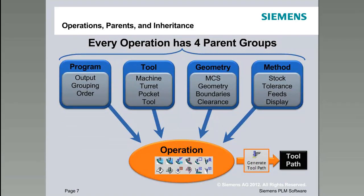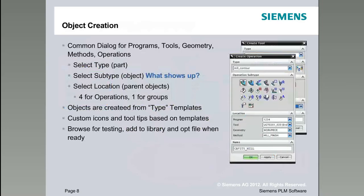Another way to look at these groups and operations: in NX, every operation really has four parent groups. You'll see this called parents, and these are represented by the four different views in the operation navigator. So every operation has to have a program, a tool, a geometry group, and a method. These are the things it inherits from each of these, so that when you generate a tool path, we get the right results — getting the tool from one place and the stock from someplace else. If you understand this, then everything else in NX CAM becomes fairly straightforward.